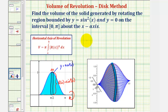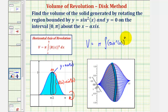The volume of the solid is equal to pi times the integral of sine squared x squared, integrated with respect to x from zero to pi. Now let's evaluate this integral on the next slide.